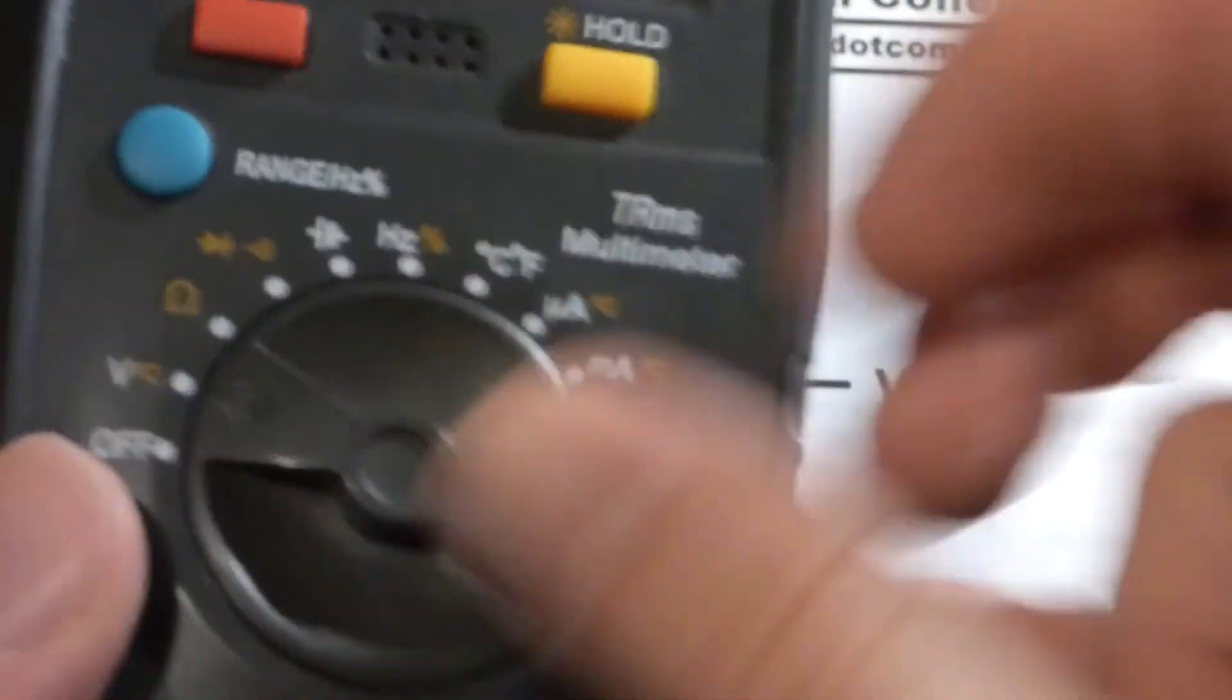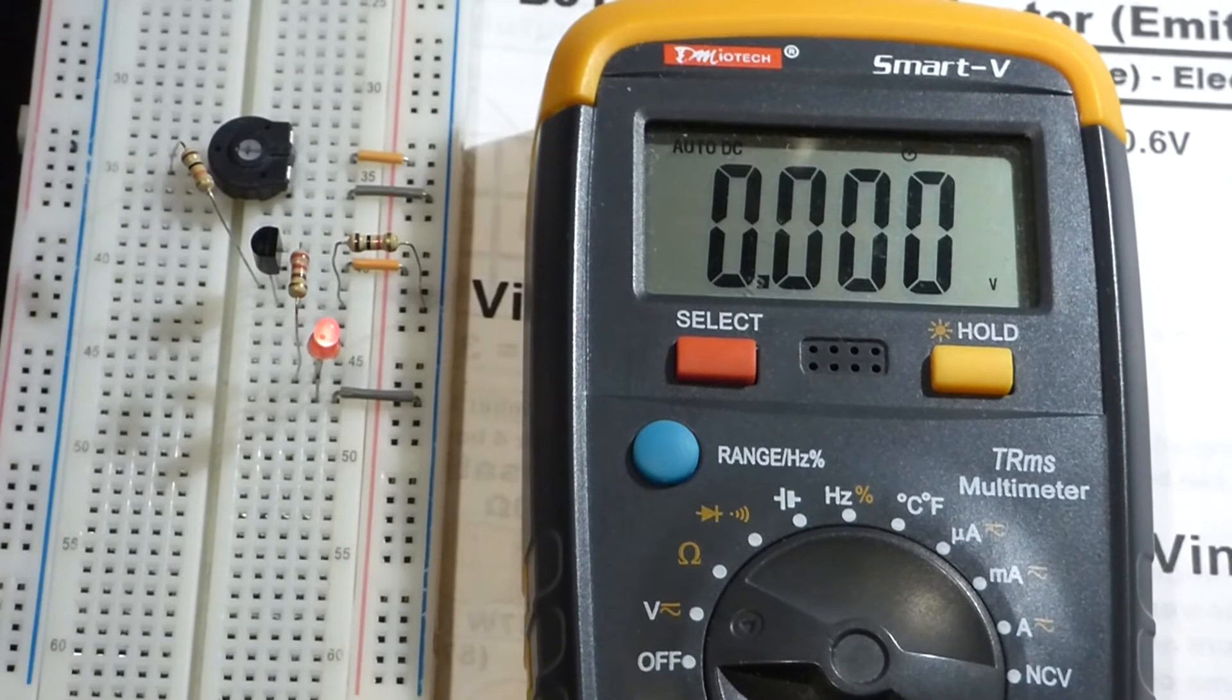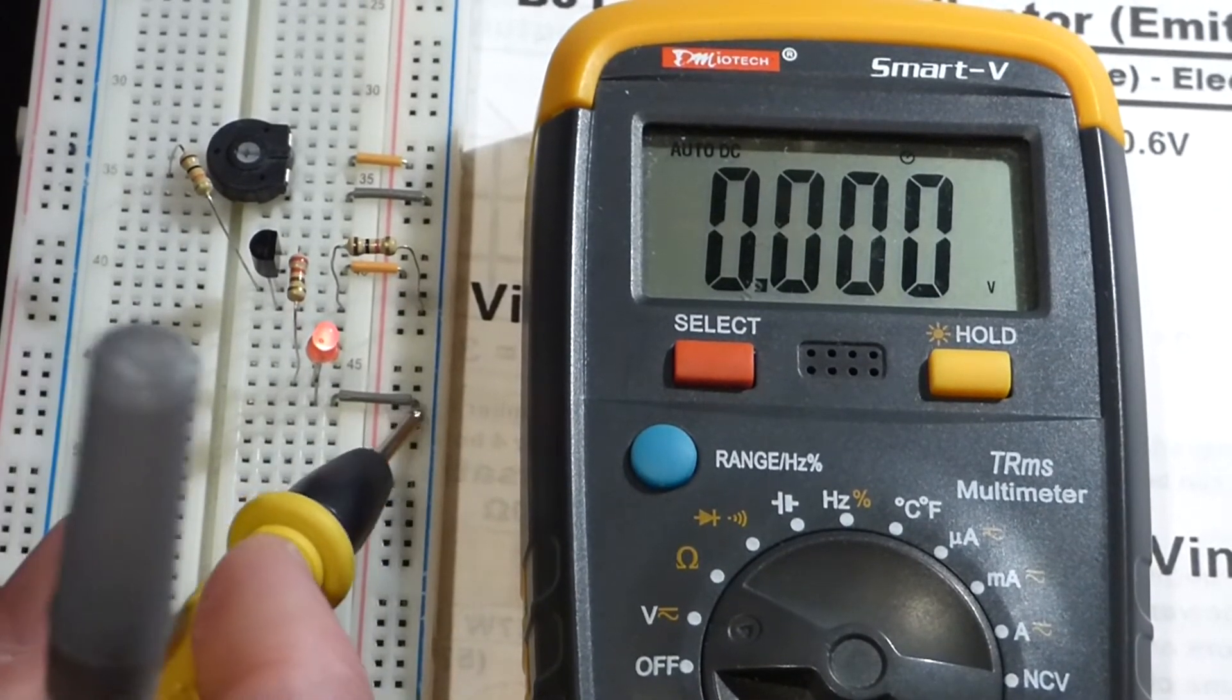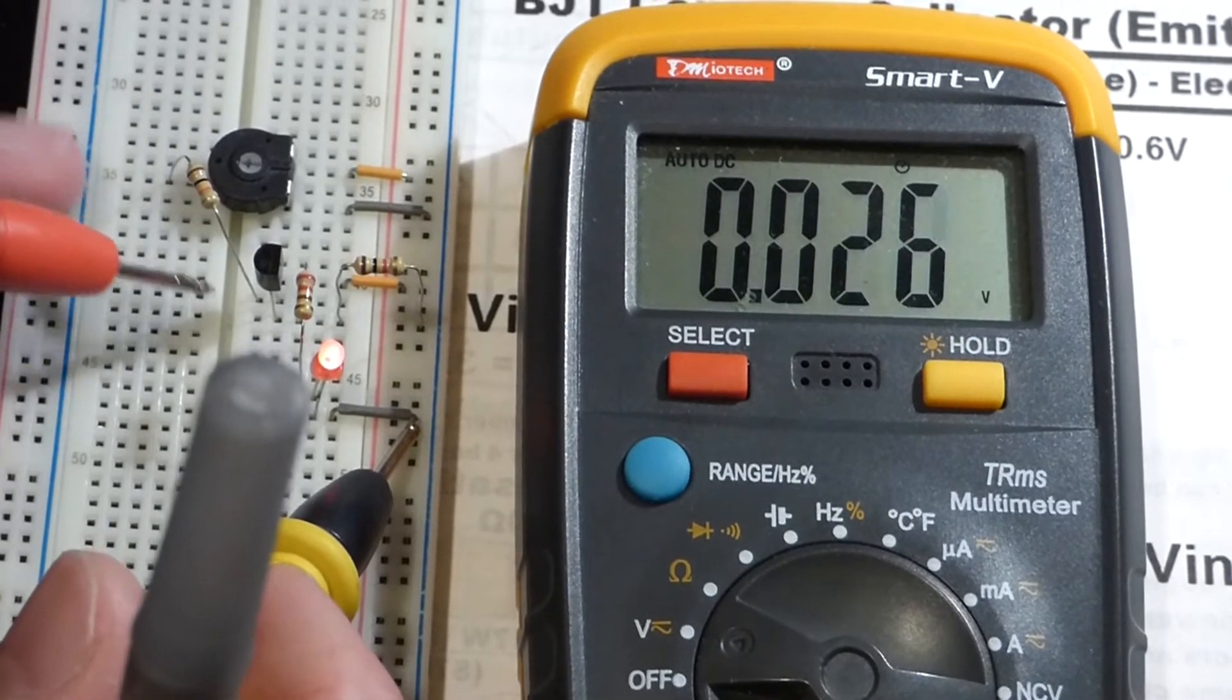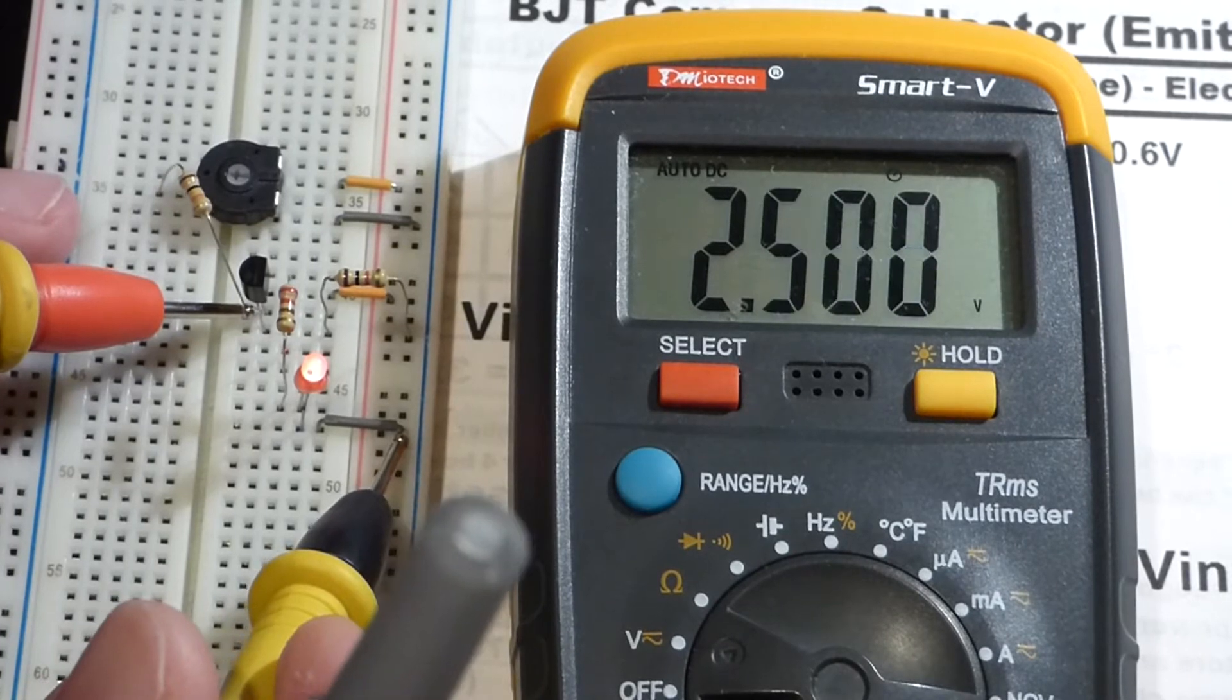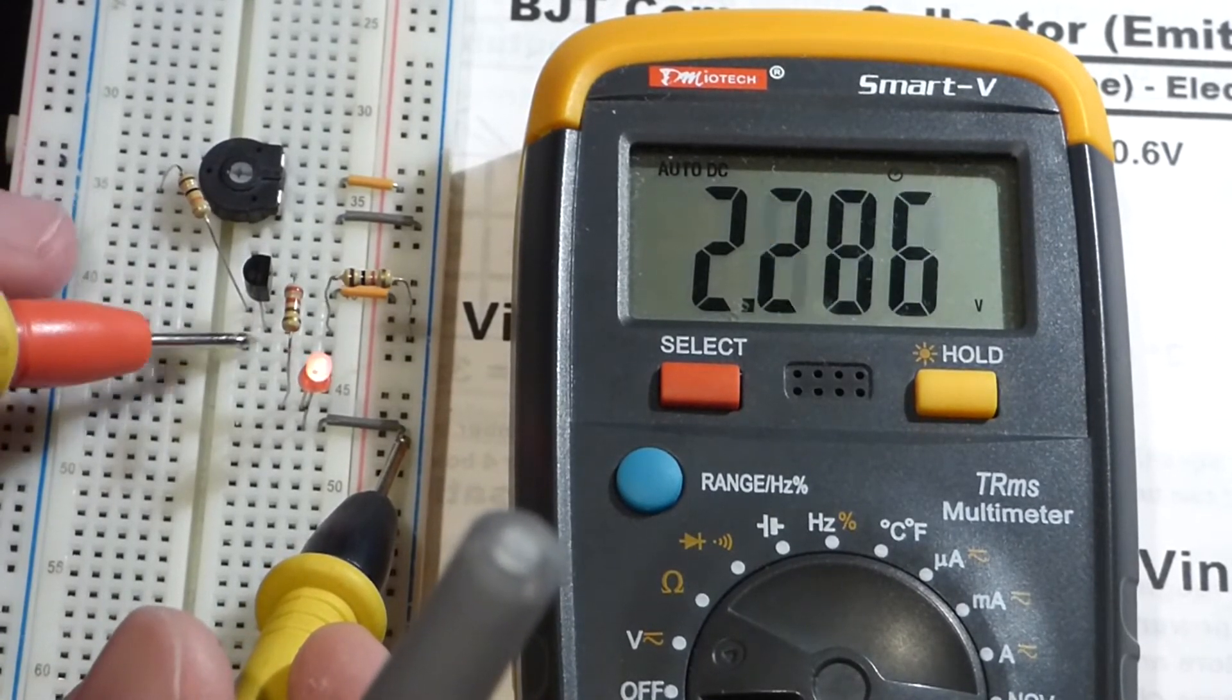So now we're going to get the multimeter and set it to read voltages. And then we'll put this end to ground here. And first we'll measure the voltage making it to the base of the transistor. And as I said, it's about 2.4, 2.5 volts in that range.